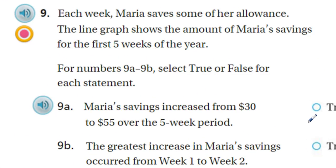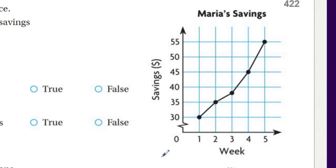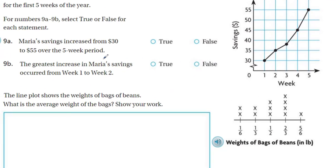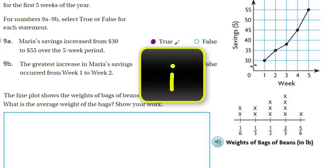It says each week Maria saves some of her allowance. The line graph shows the amount of Maria's savings for the first five weeks of the year. For numbers 9A through 9B, select true or false for each statement. Here we have week one, two, three, four, five on the x-axis. The savings jump to 30 here — so 30, 35, 40, 45. It says Maria's savings increased from $30 to $55 over the five-week period. Was that true? Well, the five-week period starts on week one — she did have 30, and by week five she has 55. So from 30 to 55, it did increase. That's absolutely true.